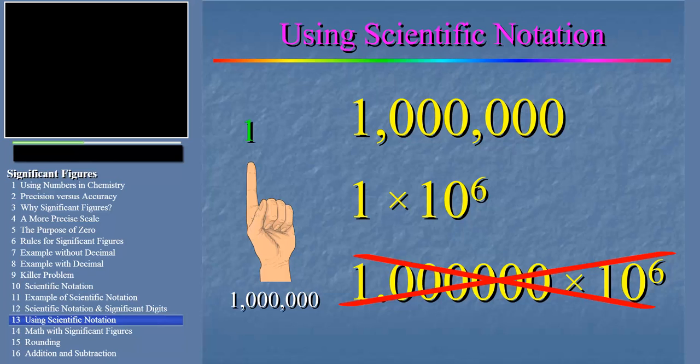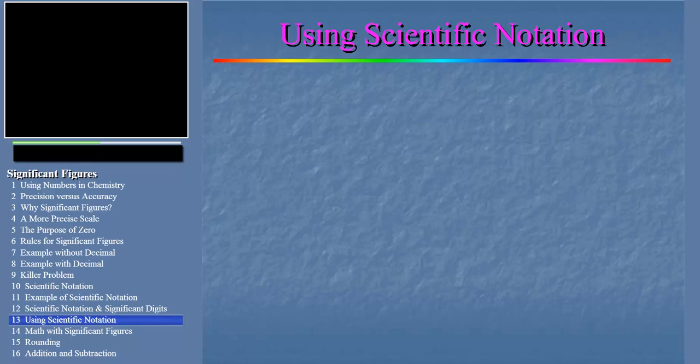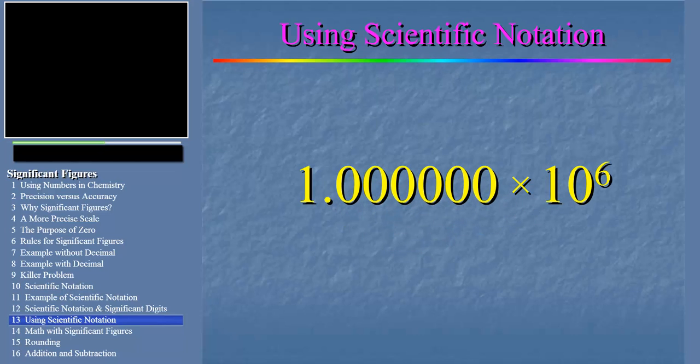But wait now. What if we wanted to show a measured number that is really precise to seven significant digits with the exact value one million? Well this is where scientific notation can really help. We now really can report the number as 1.000000 times ten to the sixth, because then the reader knows the zeros aren't placeholders but are really significant because they are after the decimal point. This number represents a measurement value of exactly one million precise to seven digits.